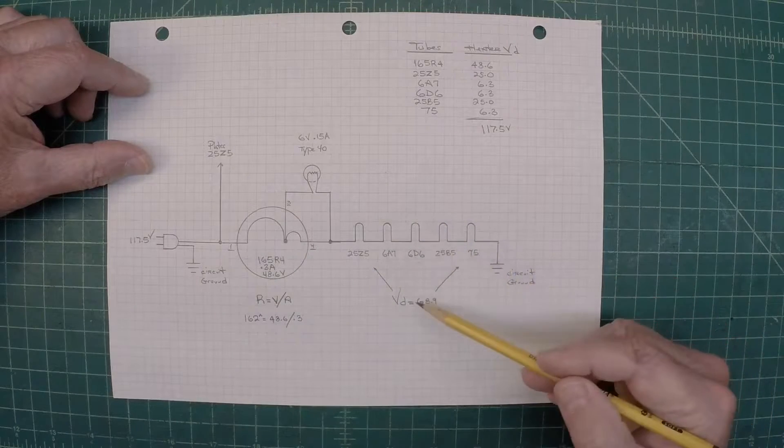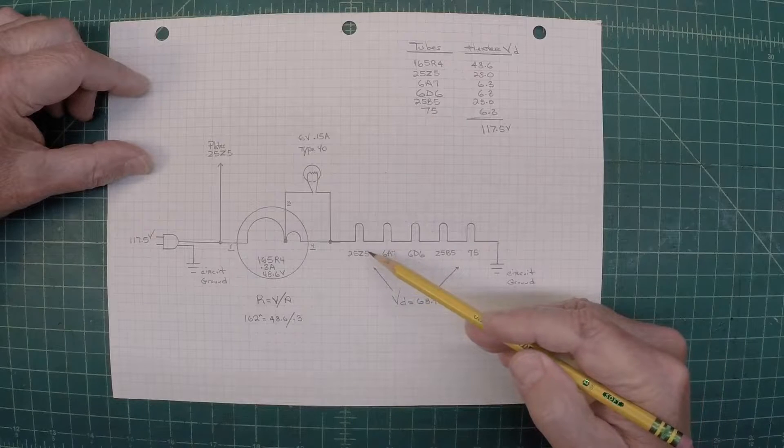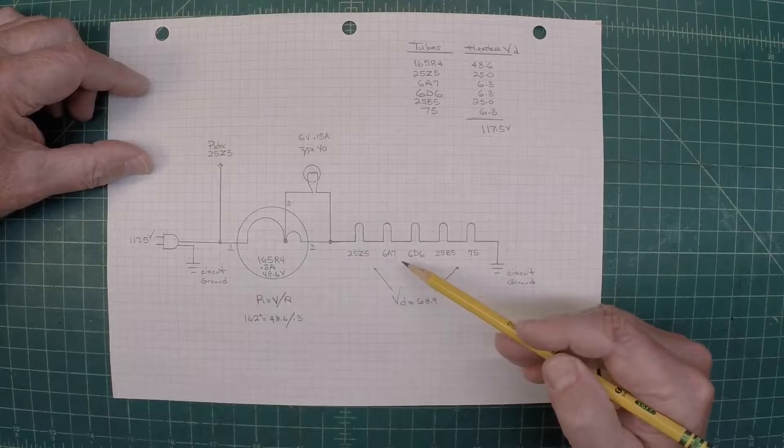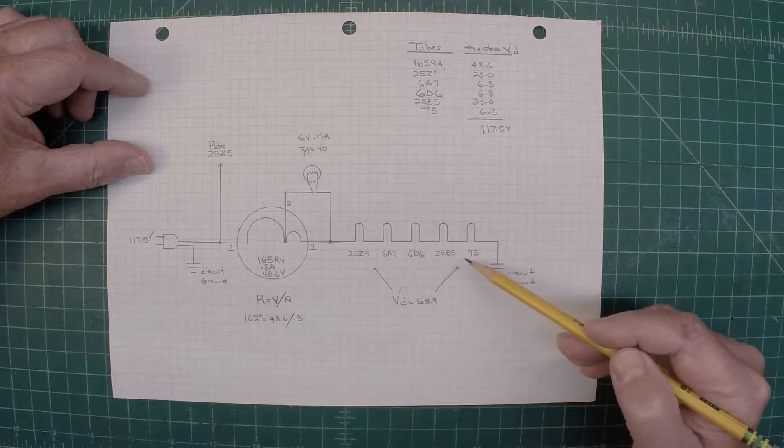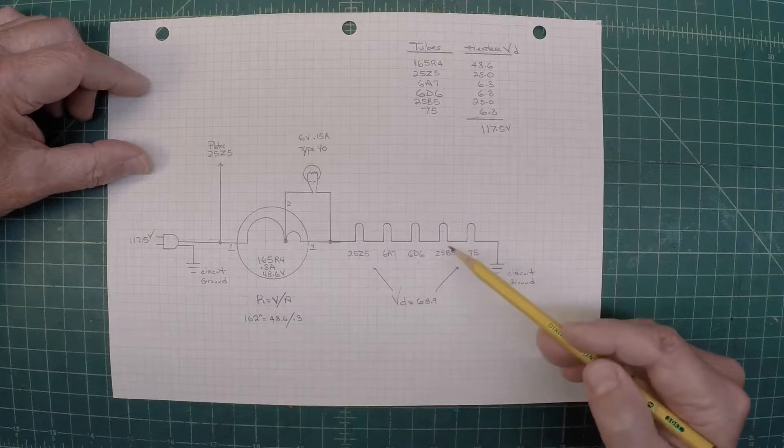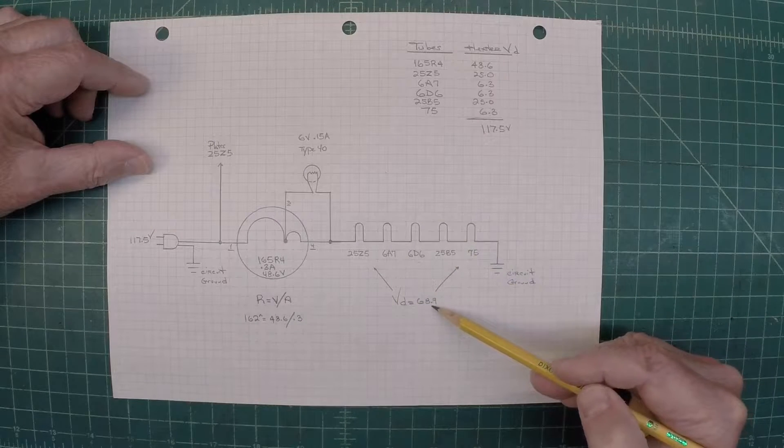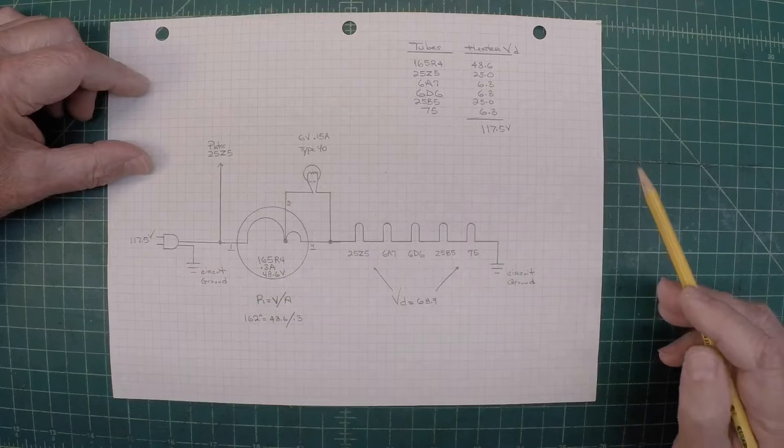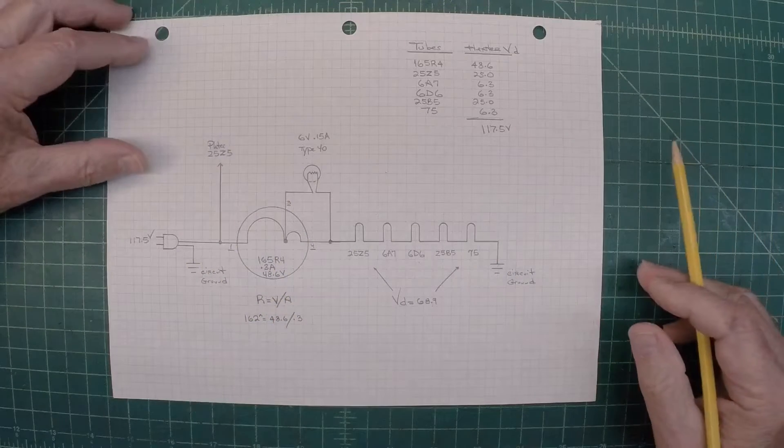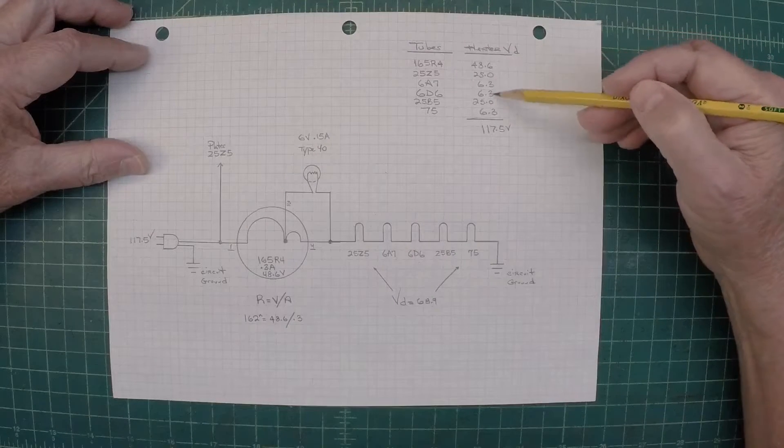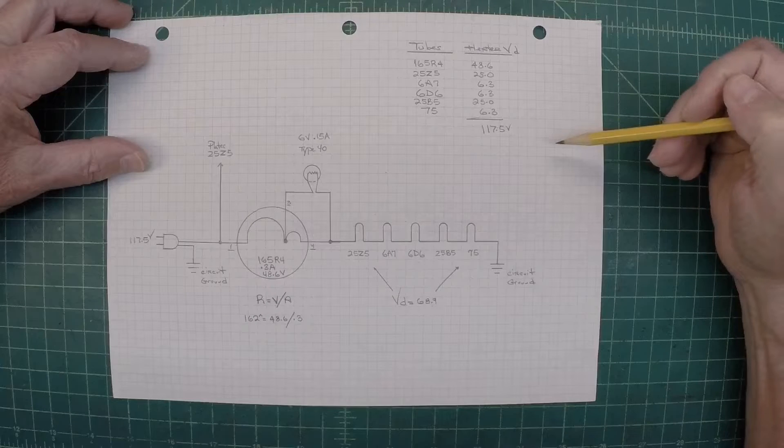In addition to the voltage drop here from the heaters of the tubes across the 25Z5, the 6A7, 6D6, 25B5, and the 75. So the drop itself here, 68.9 in addition to the 48.6 will give you the 117.5. So you're using up all the voltage. It's there. And you can see I've got those summed up here for the total. So this is a look at the current design.